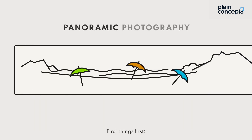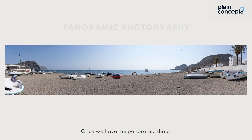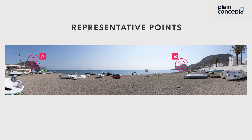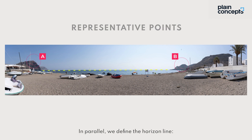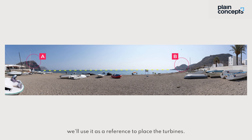First things first, we need panoramic photography. Once we have the panoramic shots, we select two representative points of each spot. In parallel, we define the horizon line, which we'll use as a reference to place the turbines.